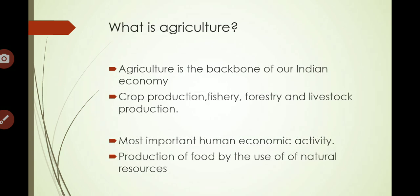Agriculture is the backbone of the Indian economy. Crop production is not only cultivation of the field, but it also includes fishery, forestry, and livestock production. So agriculture is a very broad term that covers all aspects of livestock farming, fisheries, crop production, and forestry. Agriculture is the most important human economic activity — it is the activity of man for the production of food, fiber, and fuel.